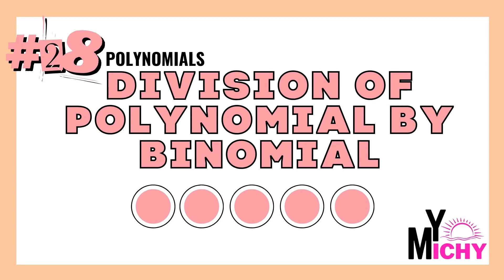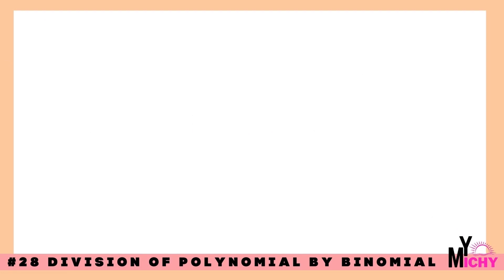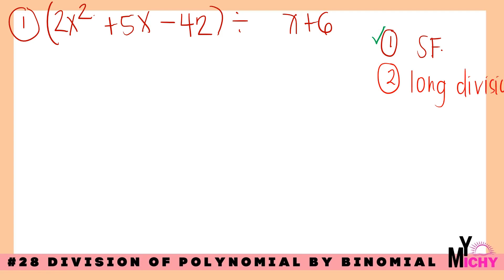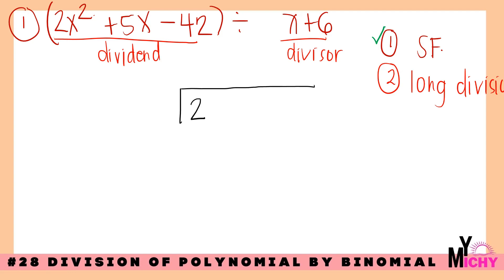Next, let's proceed with division of polynomial by binomial. Remember, there is a cycle to follow. Example number 1: 2x squared plus 5x minus 42, divided by x plus 6. First, check that the dividend is in standard form — it is. Step 2: write it in long division format, with the dividend inside and the divisor, x plus 6, on the outside.